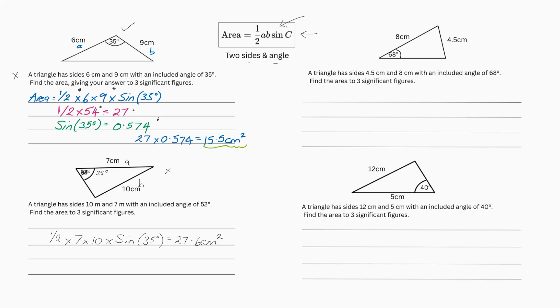However, if we're going to break it down, 7 times 10 is 70. 70 divided by 2 equals 35. And then you've got sin 35 on its own into the calculator equals 0.788. And then you're going to times it all out. So we have 35 times 0.788 equals 27.6 centimeters squared.